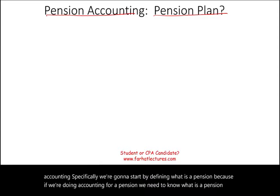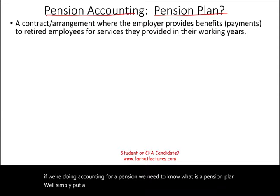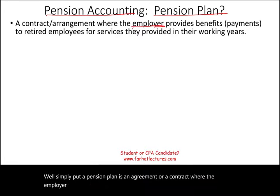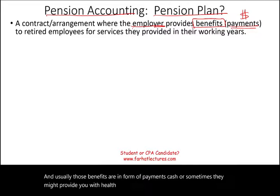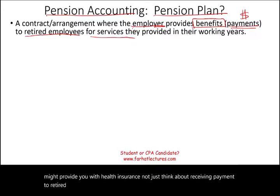Simply put, a pension plan is an agreement or a contract where the employer — the company that you work for — provides benefits, and usually those benefits are in the form of payments, cash, or sometimes they might provide you with health insurance. Let's just think about receiving payment to retired employees for services they provided in their working years.